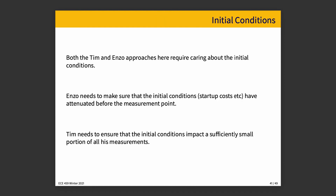But both the Tim and Enzo approaches require that samples take place at the right times. Enzo needs to make sure that the time he chose of 1,000 seconds is far enough along into the simulation that the initial startup costs have attenuated. And Tim needs to make sure that the startup conditions are impacting a sufficiently small portion of the measurements that they don't throw it off. If it's only the first 2% of measurements, then the data is going to be valid and will tell us the answers we are interested in.